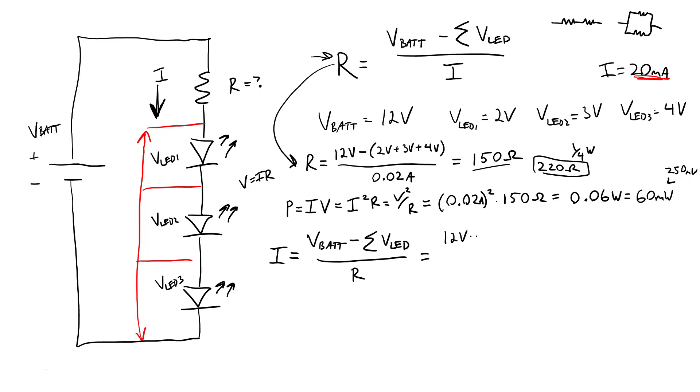That's going to be 12 volts minus the sum of the LED voltages, 2 volts plus 3 volts plus 4 volts, all divided by our new resistor value of 220 ohms. And that's going to give a current of 0.0136 amps or 13.6 milliamps.